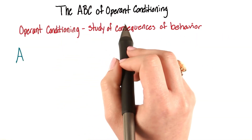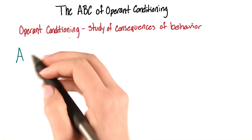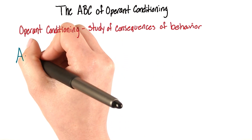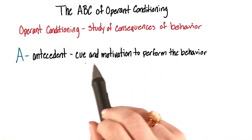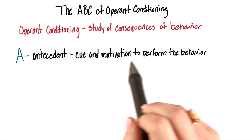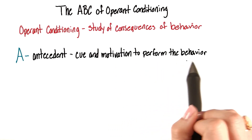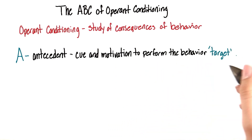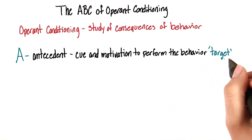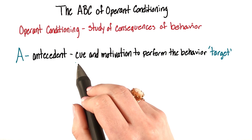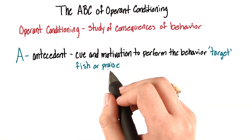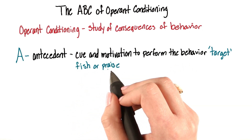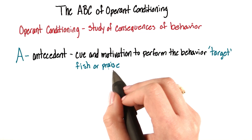We have the ABCs of operant conditioning. The A is the antecedent — there has to be a cue and a motivation to perform the behavior. As you will see, Dr. Zellig uses a target as the cue. The fish reward, or the praise, is the motivation to do the behavior.